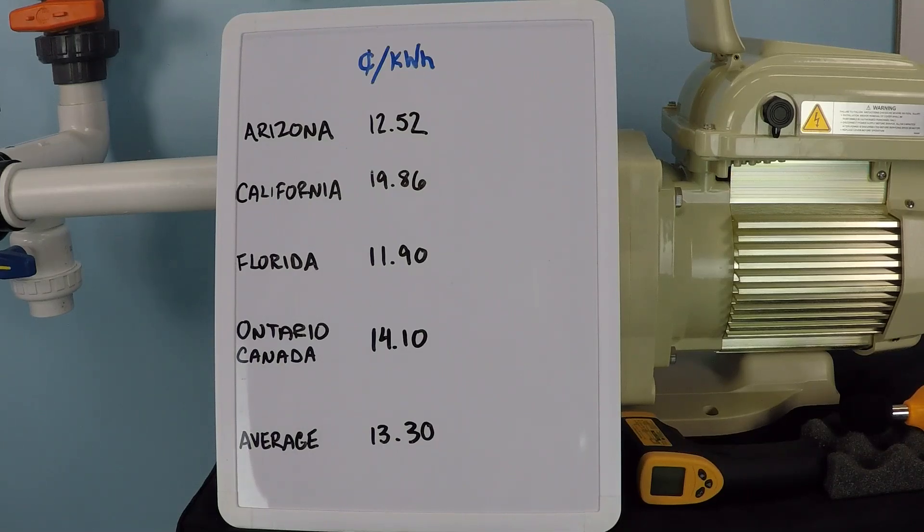When trying to calculate the electrical savings or potential for electrical savings when upgrading to a variable speed swimming pool pump for your main filtration pump, one of the things that you're going to need to know is how much you pay for your electricity and how all that works.